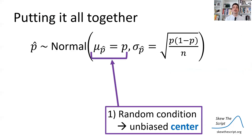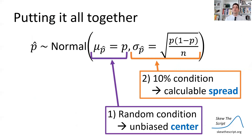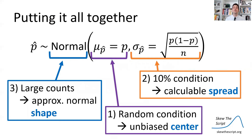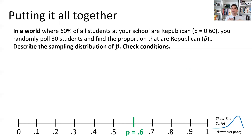Putting it all together: we need the random condition to make sure we have an unbiased center. We need the 10% condition to make sure we have the formula to calculate spread. And we need the large counts condition to make sure our distribution is approximately normal in shape. So we can use these conditions to come up with estimates for our inference procedures.